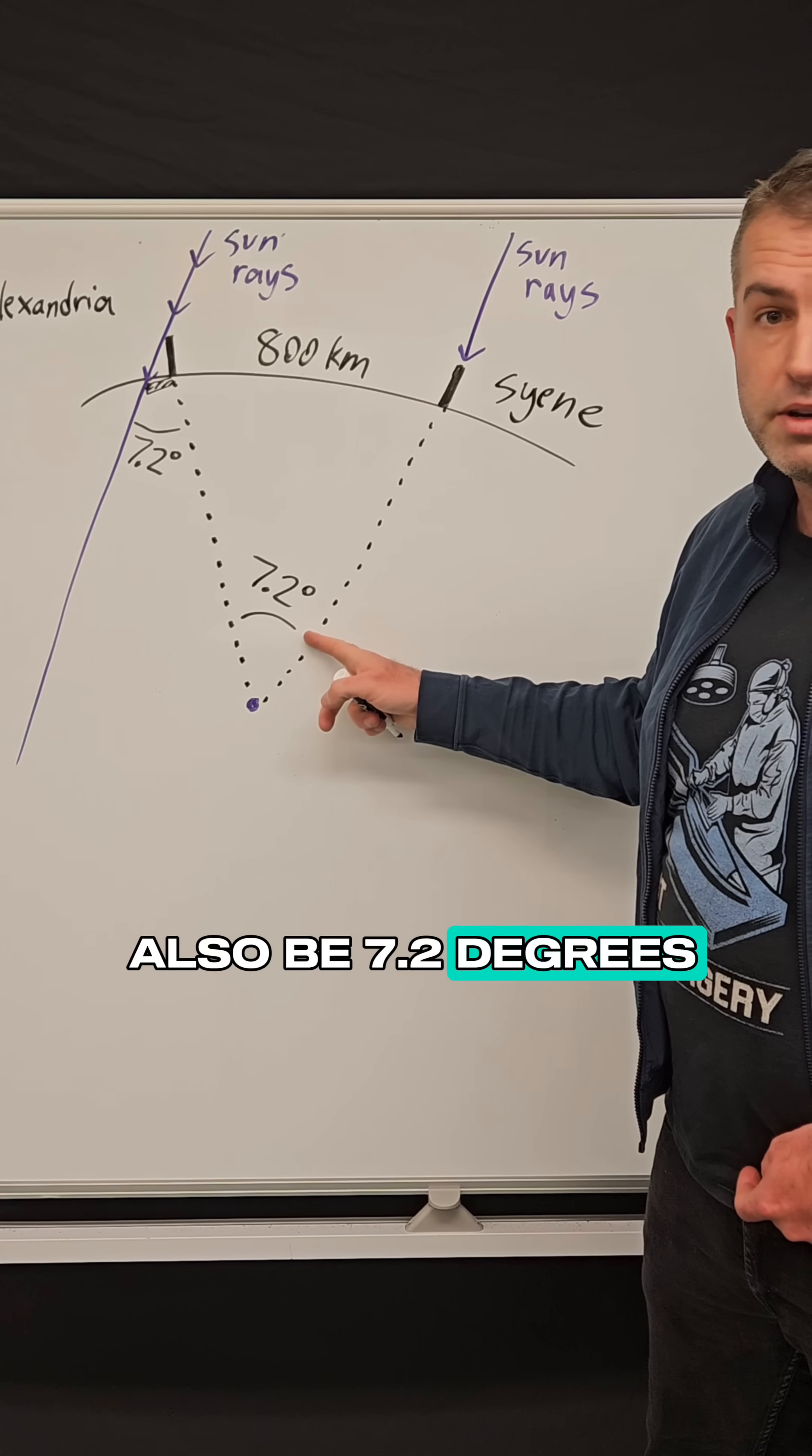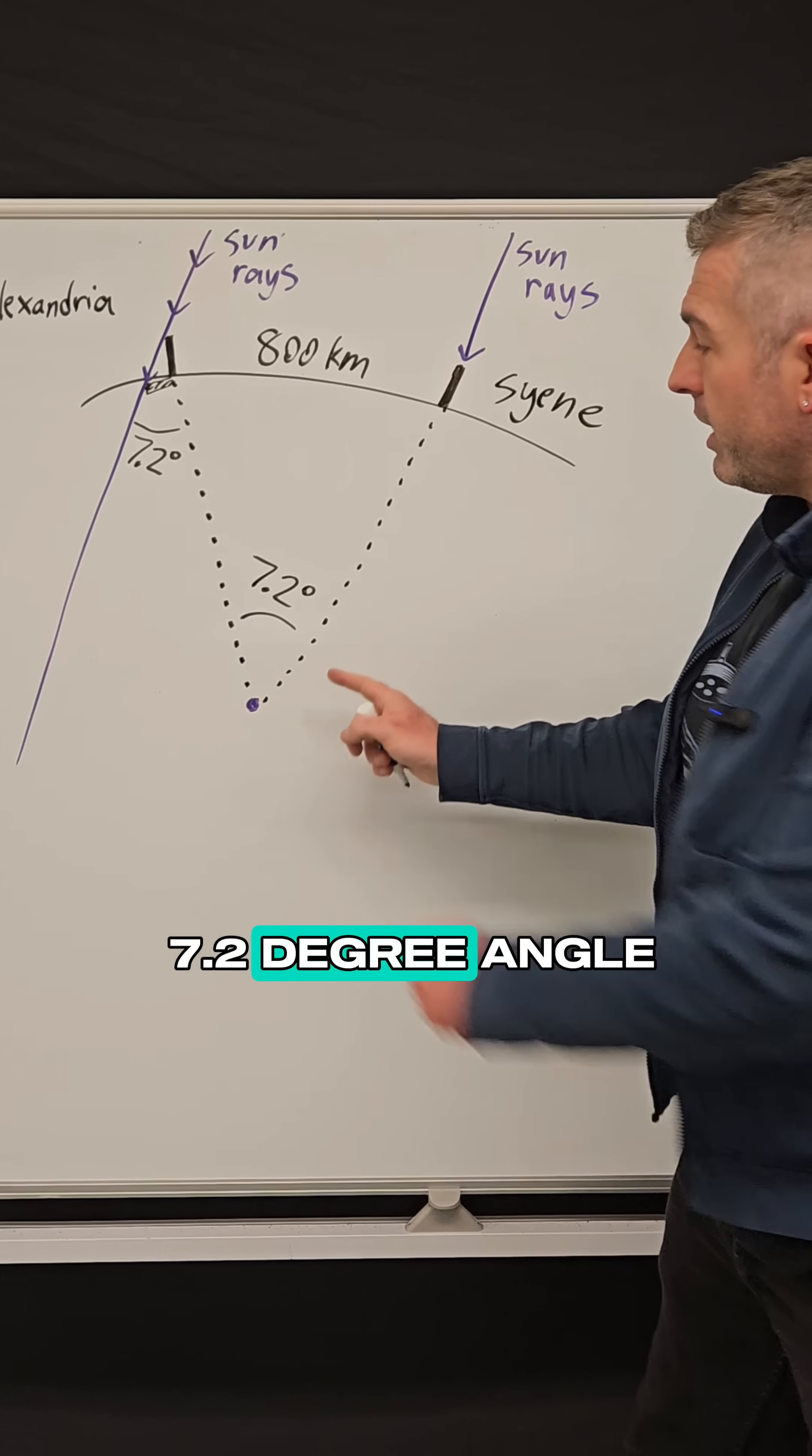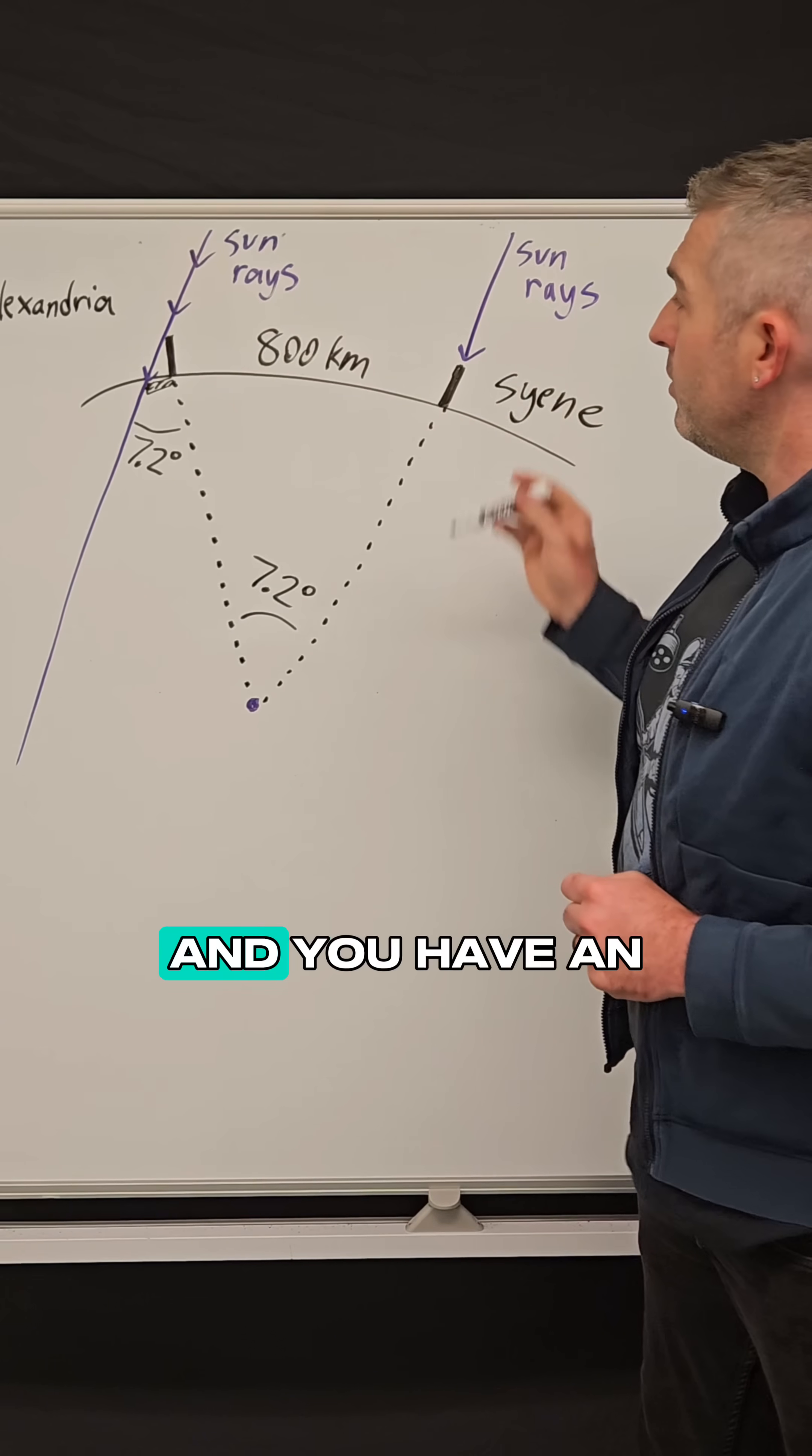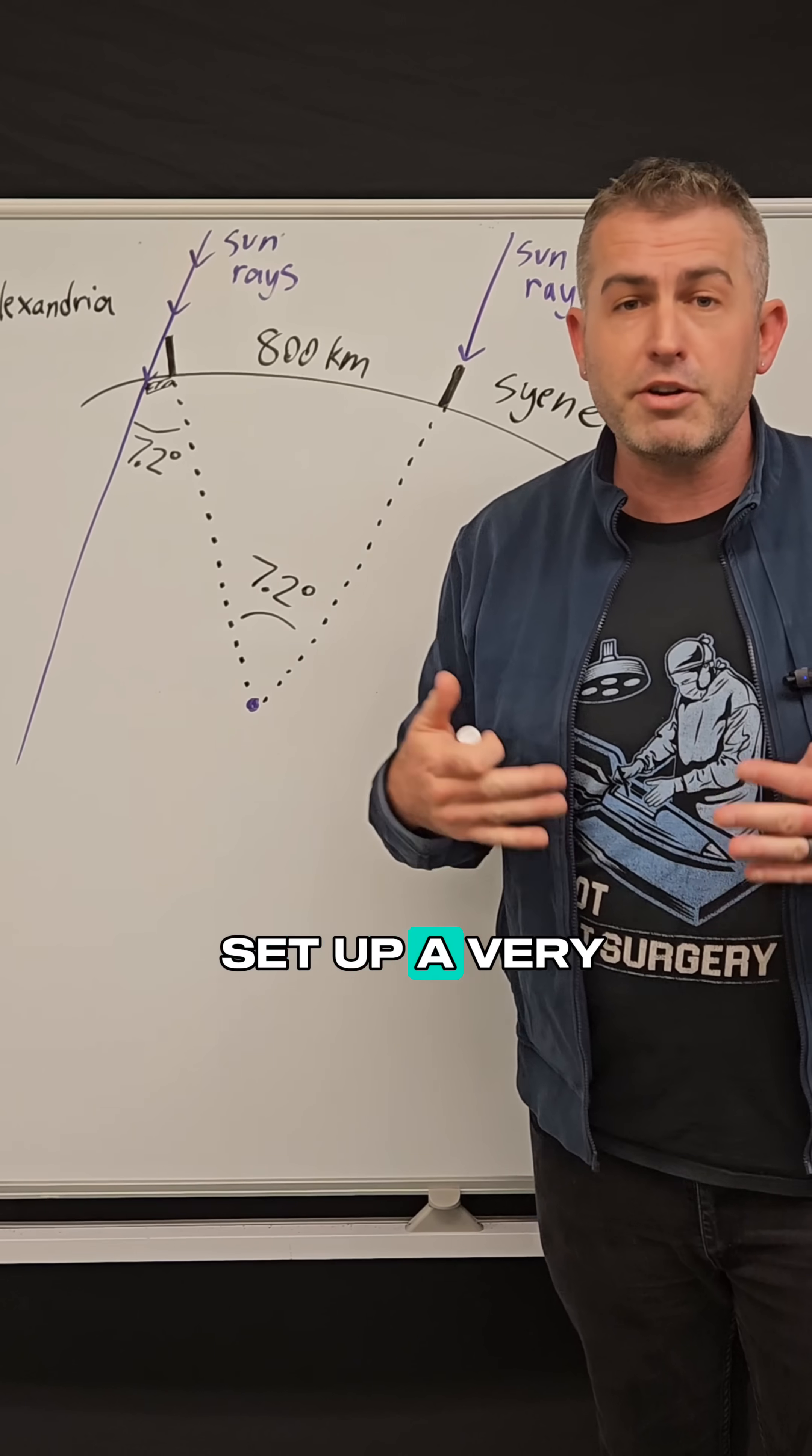So imagine this little slice of earth where you have a 7.2 degree angle between your two cities and you have an 800 kilometer distance between them, and now you can set up a very simple ratio.